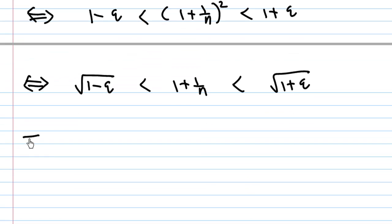Subtracting 1 on both sides, I have √(1-ε) - 1 < 1/n < √(1+ε) - 1.